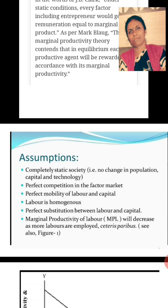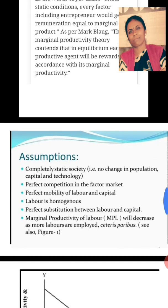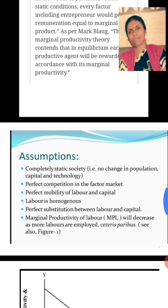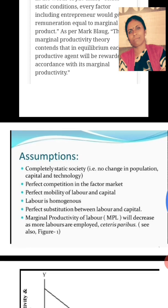One more assumption is perfect mobility of labor and capital. The factors of production are freely mobile between different regions and employment possibilities. The marginal productivity of a factor unit will be the same in all occupations and all employment possibilities. Labor and capital are easily mobile from one place to another.